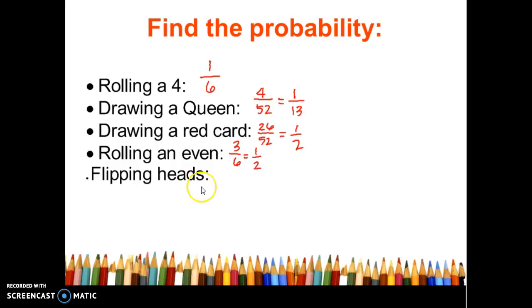And then flipping a heads on a coin. So you have heads and you have tails. So heads is one option out of two possible options. And then sometimes if we have to write it out, sometimes you would say the probability of rolling a 4 equals 1 out of 6. So you have something in parentheses. Or the probability of a queen equals 1 out of 13. That's just more for notation purposes. But that's the general idea of probability. It's what you want divided by the total number of possibilities that you can have.